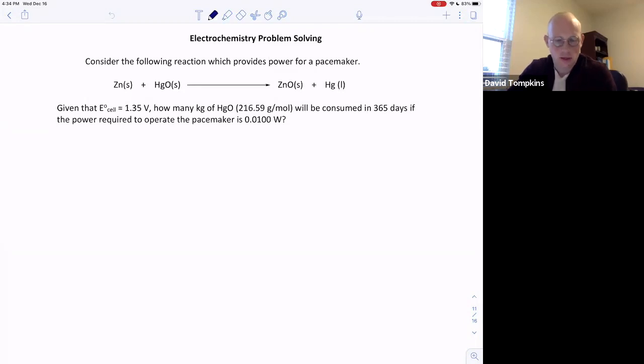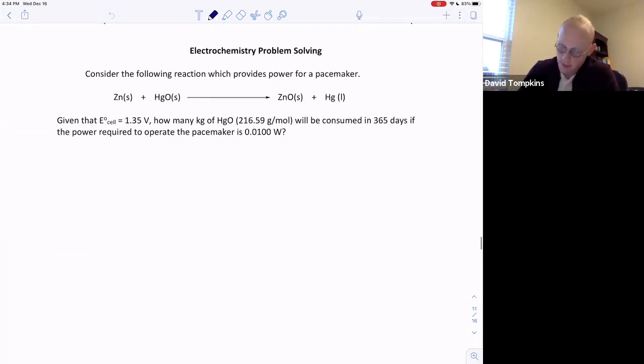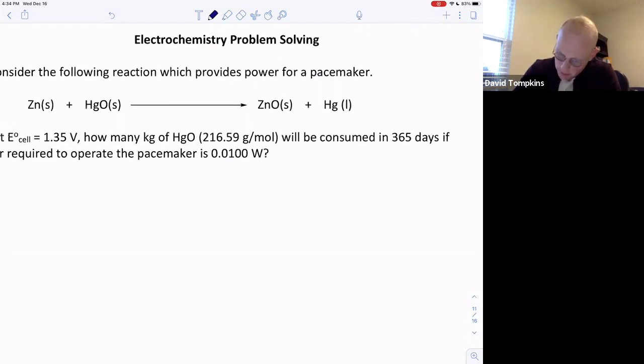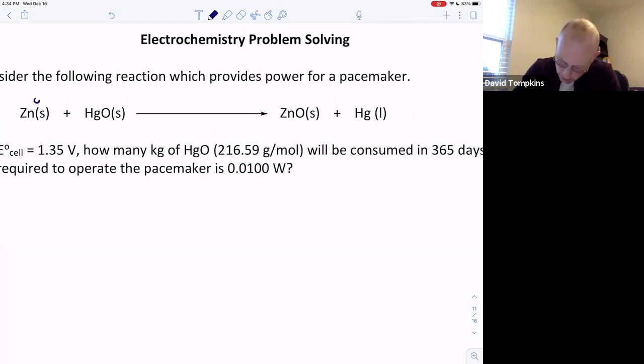In this video, we're going to talk about an example of electrochemistry problem solving, where we're given a reaction that is used to power a pacemaker. This reaction involves the oxidation of metallic zinc, which is in the elemental zero oxidation state, to two plus when paired with oxide in the form of zinc oxide.